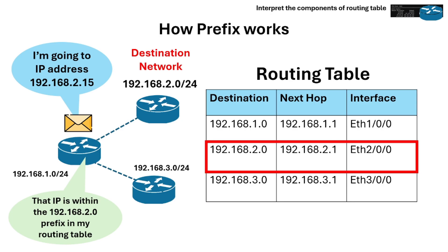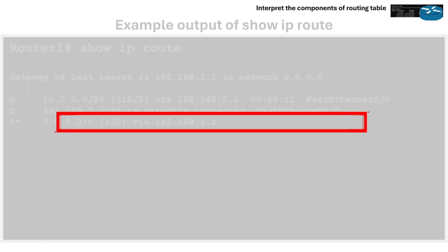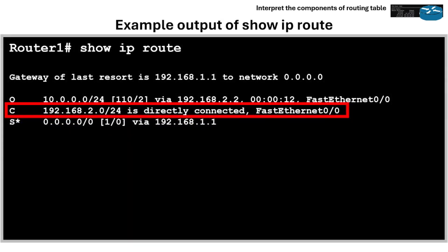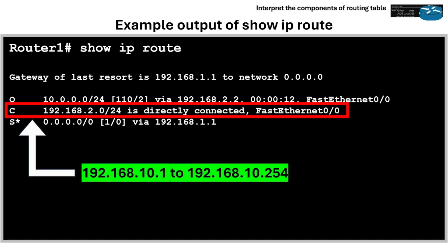In this routing table example, the prefix would be 192.168.2.0/24. This means any packet with a destination from 192.168.10.1 to 192.168.10.254 will match this route.